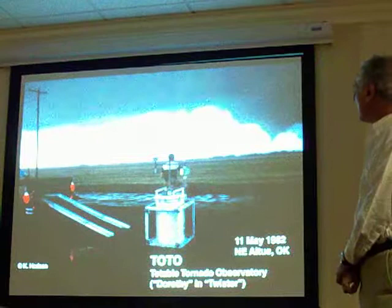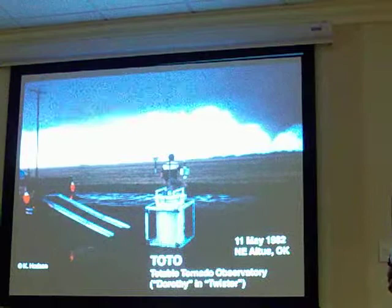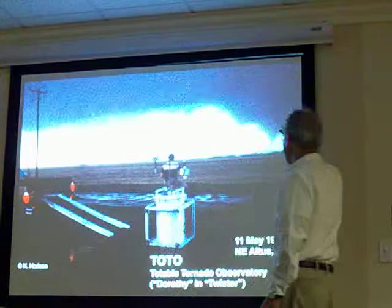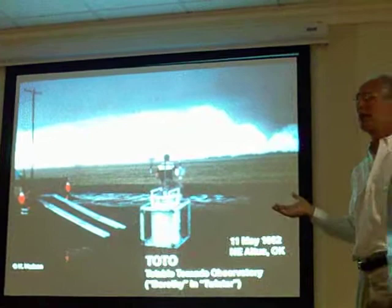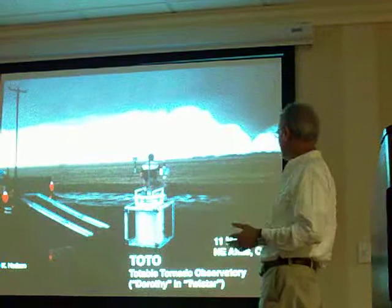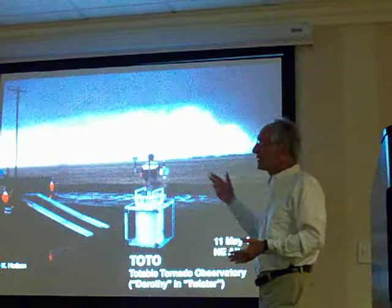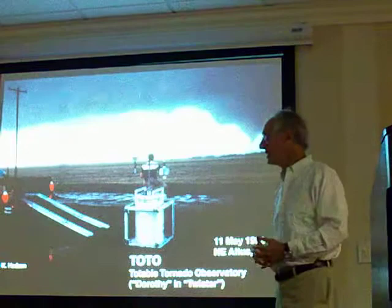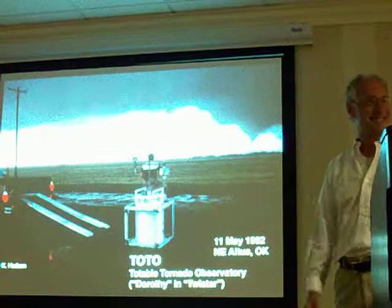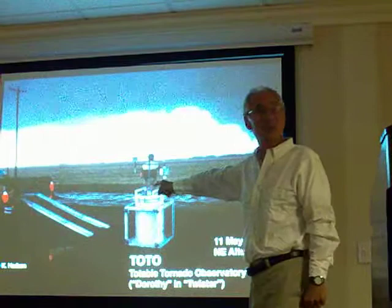TOTO — the Total Tornado Observatory — was a 400-pound device that we put in a pickup truck. The idea was to place it in the path of a tornado, which is what people do routinely now. Back then it was brand new. When the movie Twister was being made, people came to my office and I showed them a picture of TOTO and gave them a journal article about our scientific results. They renamed it Dorothy in the movie and gave us zero credit.